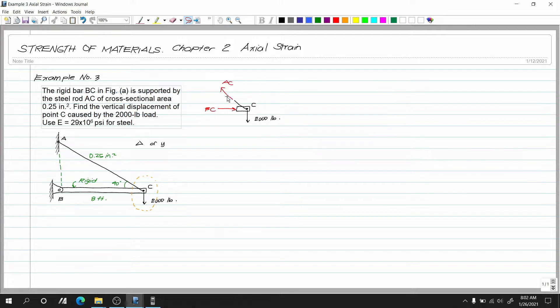So anong slope natin dito? So wala tayong slope pero meron naman tayong angle 40 degrees. So ang ibig sabihin ko sa slope is yung vertical and horizontal slope. So meron tayong angle na given dito or rotation. Hindi naman natin kailangan i-solve yung BC. Hindi rin natin sya basta-basta ma-solve gamit yung summation of forces horizontal. Kailangan lang natin dito is yung AC.